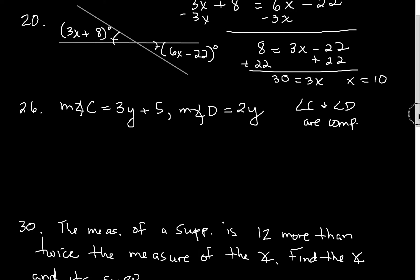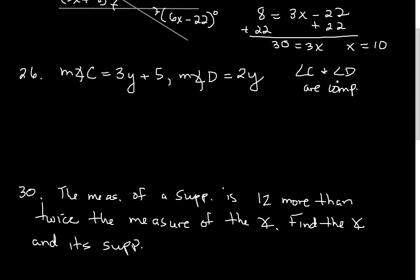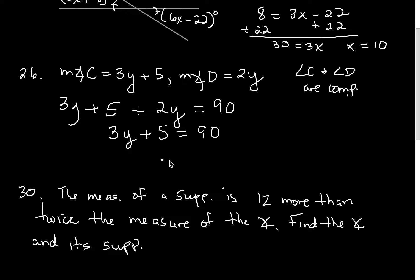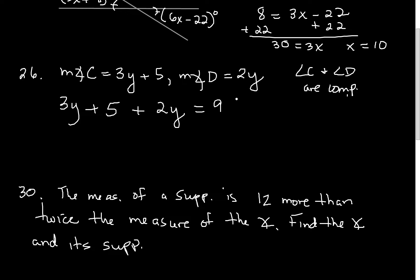Number 26: angles C and D are complementary, and they're given in terms of y. Since they're complementary, they add up to 90 degrees — if they were supplementary you'd set it equal to 180. So 3y plus 2y plus 5 equals 90. That gives us 5y plus 5 equals 90. Subtract 5 from both sides: 5y equals 85. Divide by 5 and y equals 17.